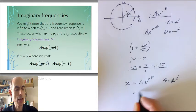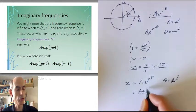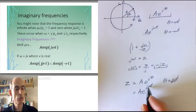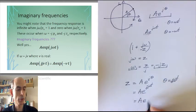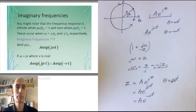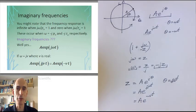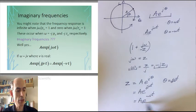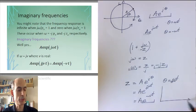Substitute that into here and I would get a times e to the j, j nu t. j squared is minus one, so that would be a e to the minus nu t. That's another oscillation. This is a perfectly real function which starts at time t equals zero at one and then decays down to zero. It looks like this.